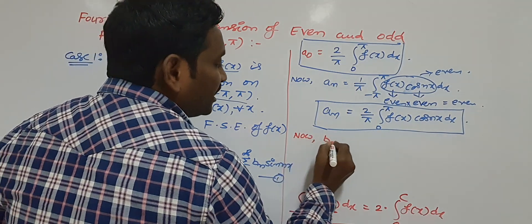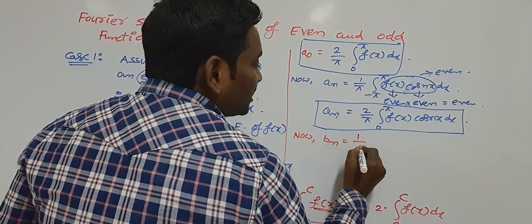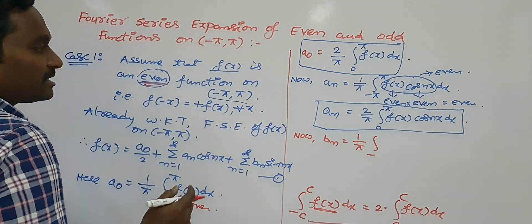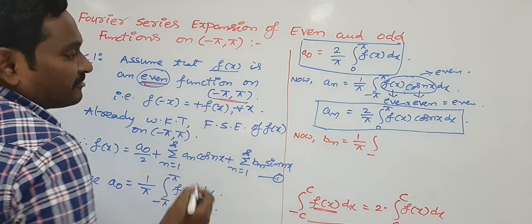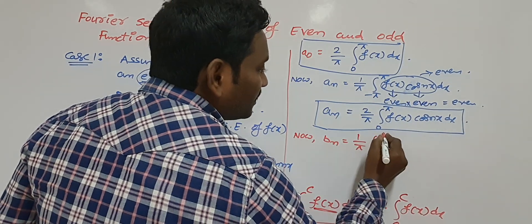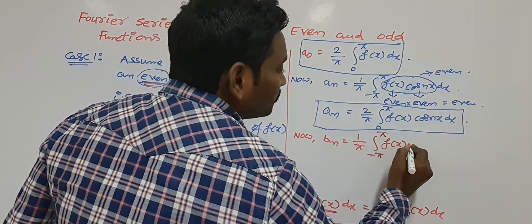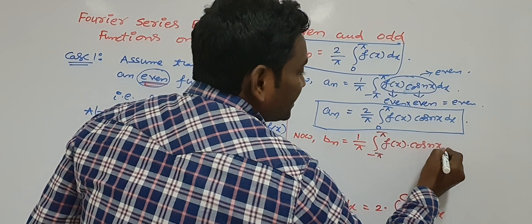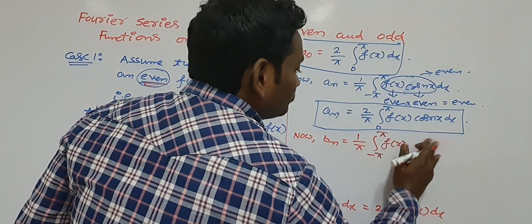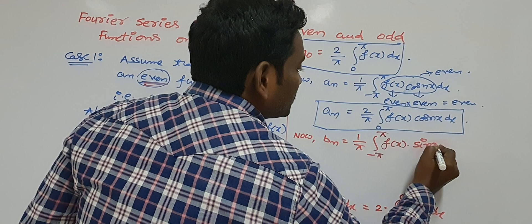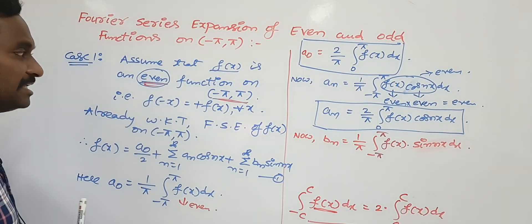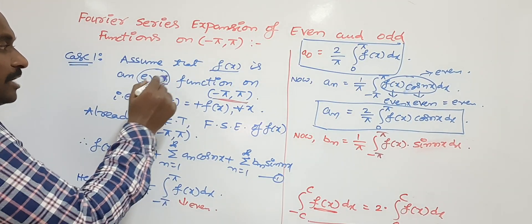Similarly, we have to find the value of bₙ. bₙ = (1/π)·∫₋π^{+π} f(x)·sin(nx) dx. We observe that f(x) is even.